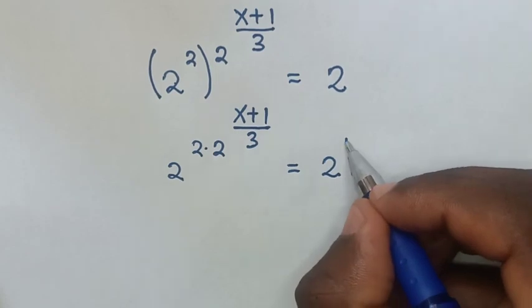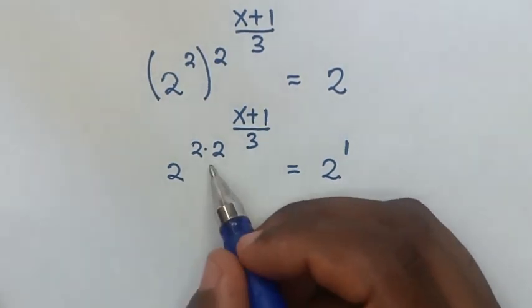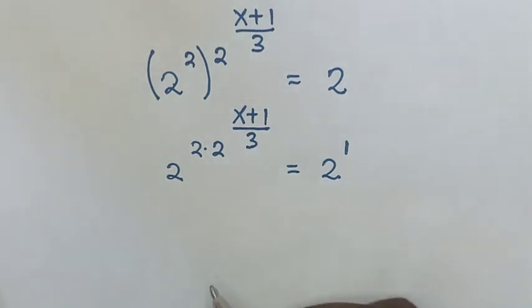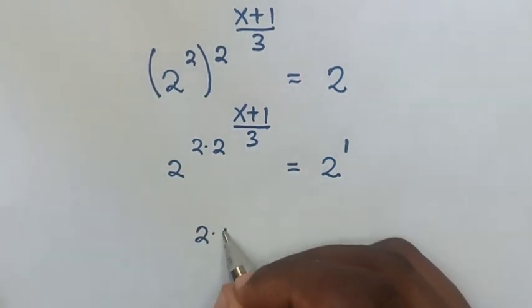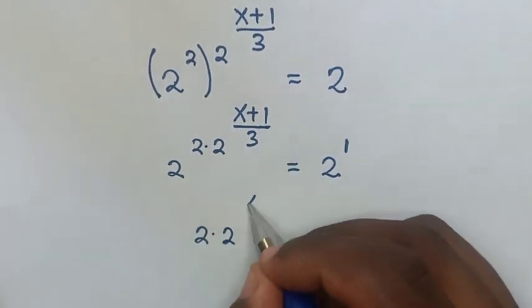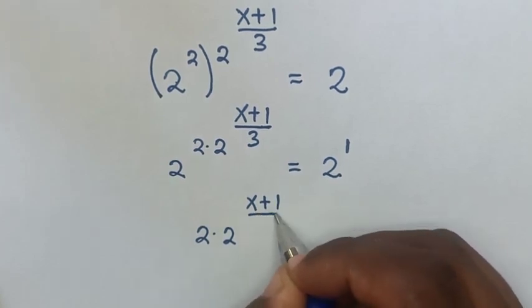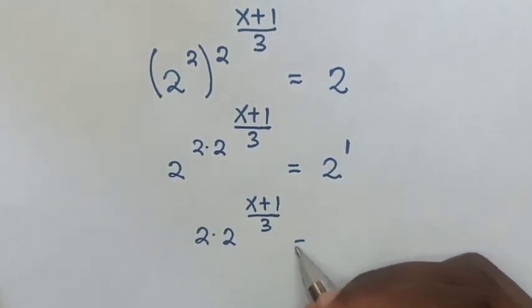this 2 is the same as 2 to the power of 1, then we will compare the powers. So it will be 2 times 2 to the power of (x+1)/3 equals 1.